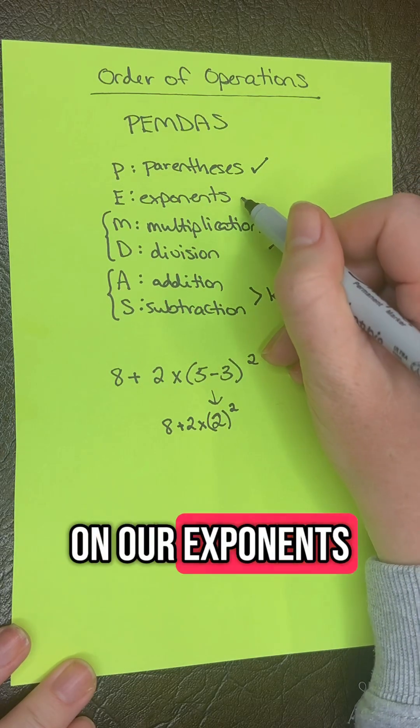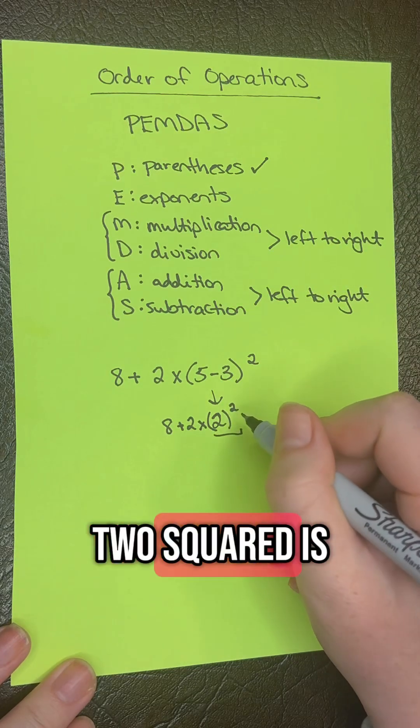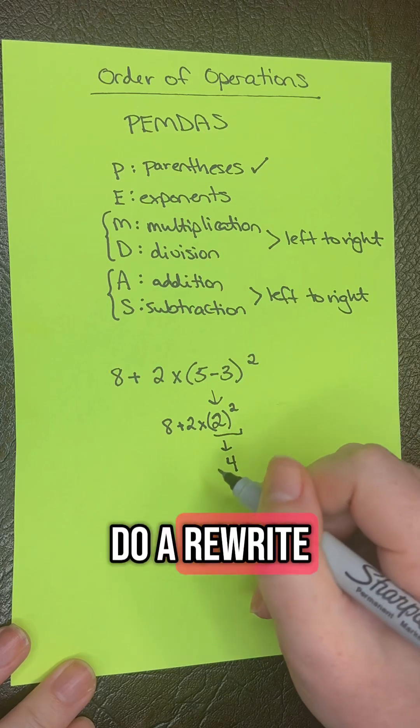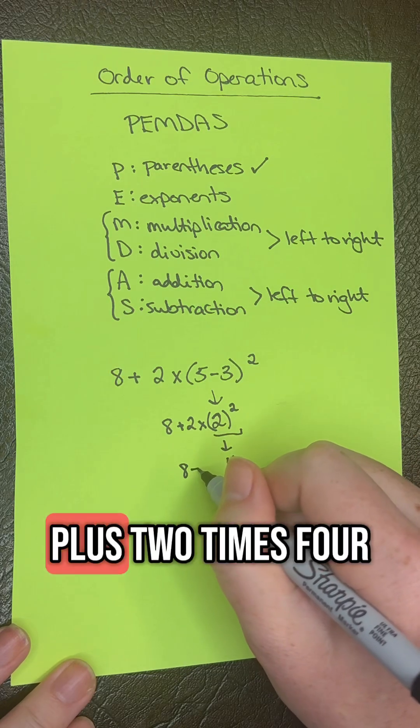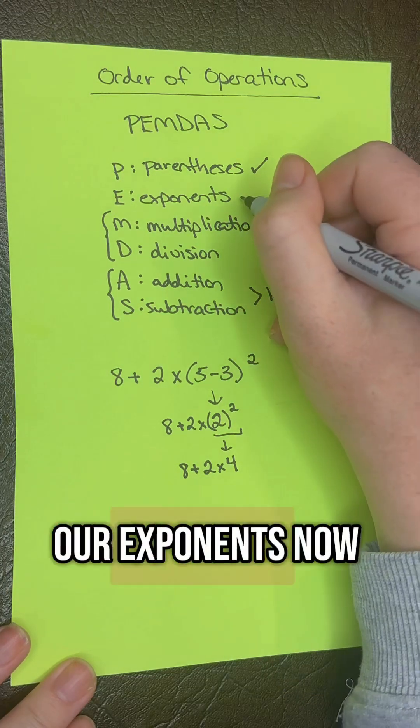Now let's work on exponents. We have 2 squared, which gives us 4. Let's rewrite: 8 plus 2 times 4. We've done our exponents.